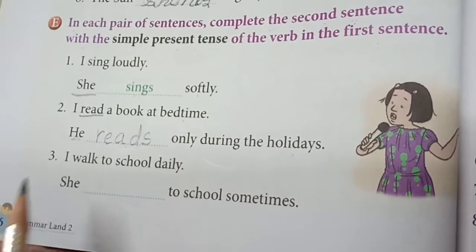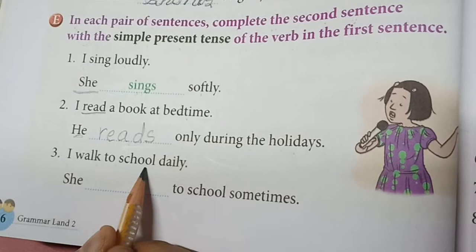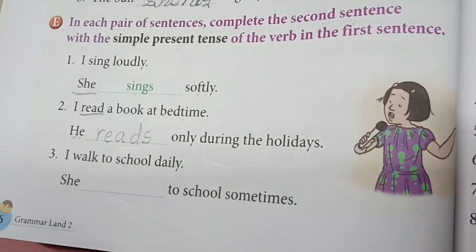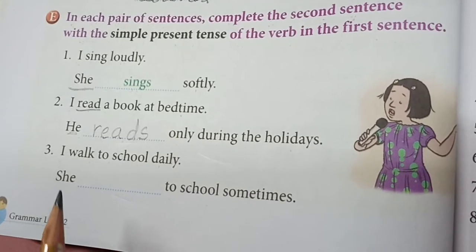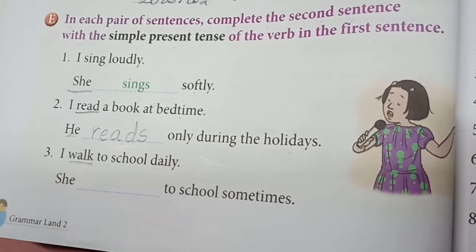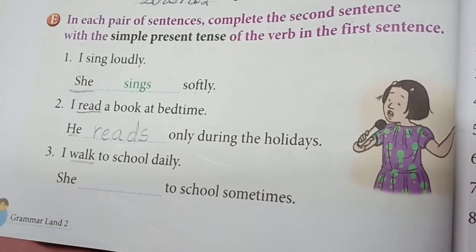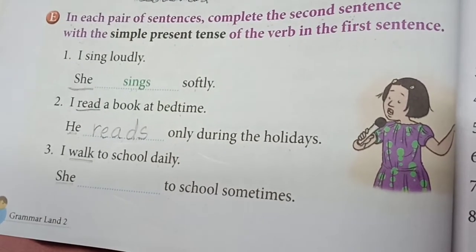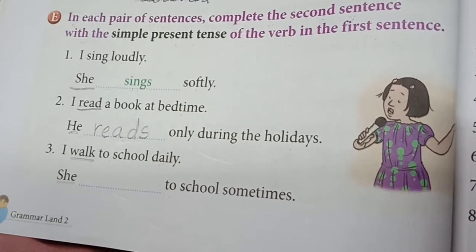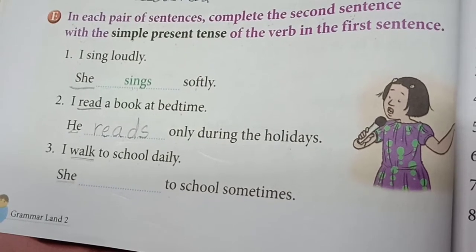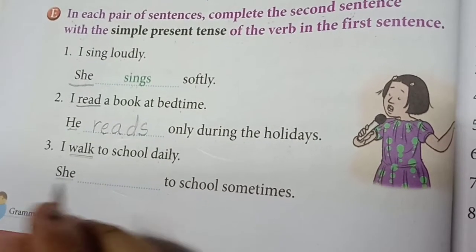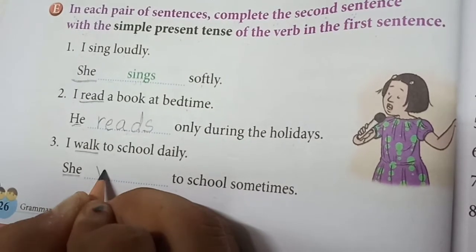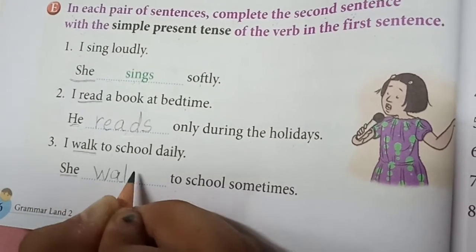Next example: 'I walk to school daily. She dash to school sometimes.' Find the verb in the first sentence — 'walk' is the verb. Here 'she' is written, so we add s because we add s after he, she, and it. So 'walk' becomes 'walks'.